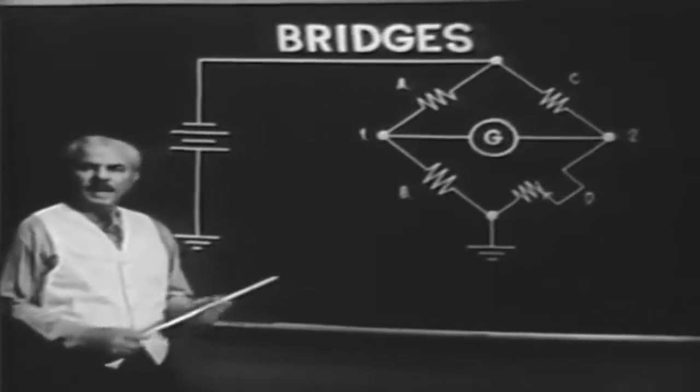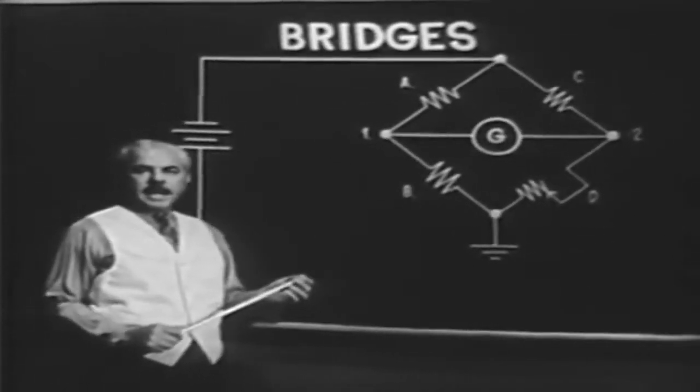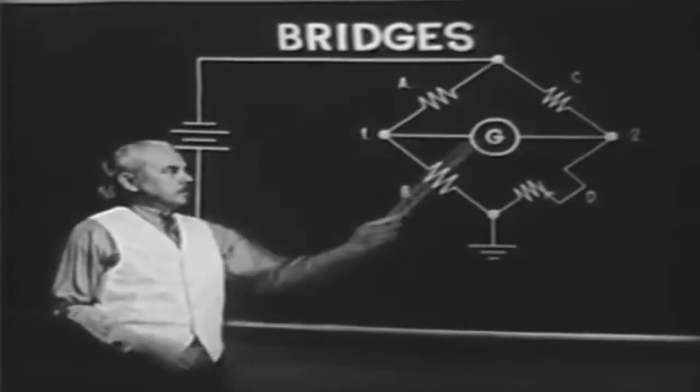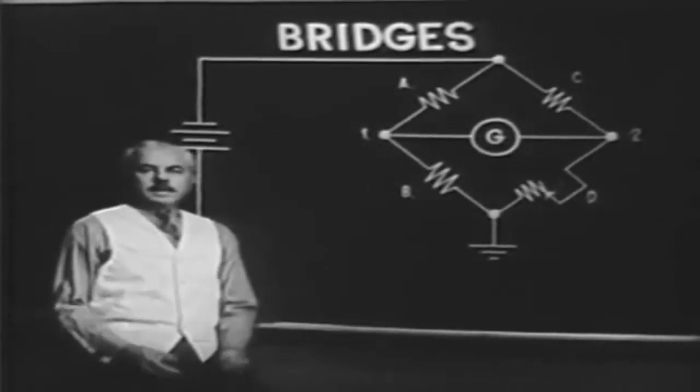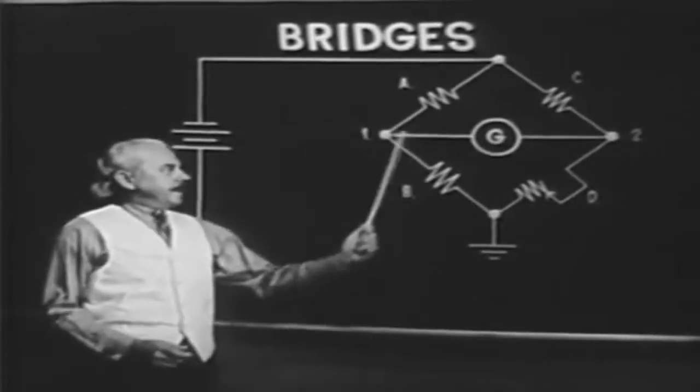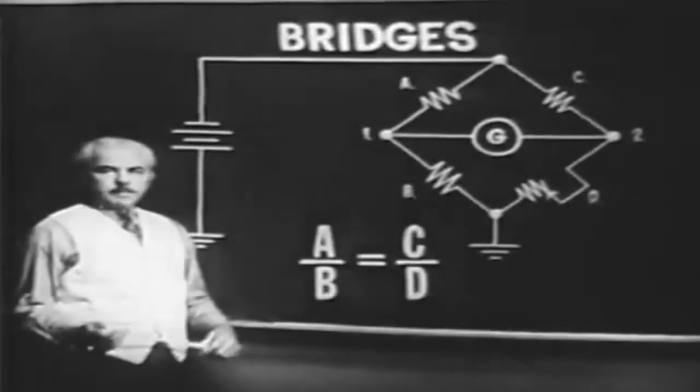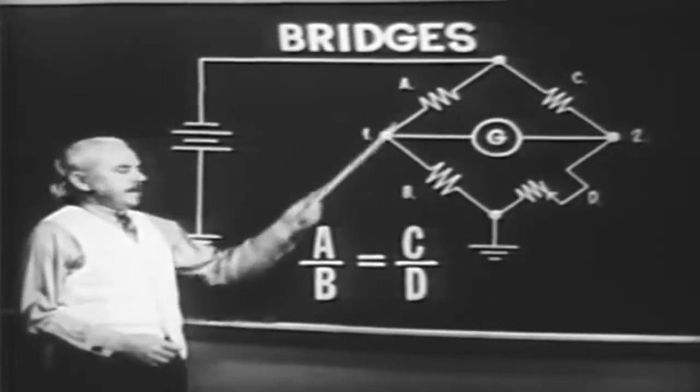Here are some very important points that you must remember about the bridge circuit. It is widely used for both precision measurements and control devices. When balanced, points 1 and 2 are at the same potential, and the detector has zero current.